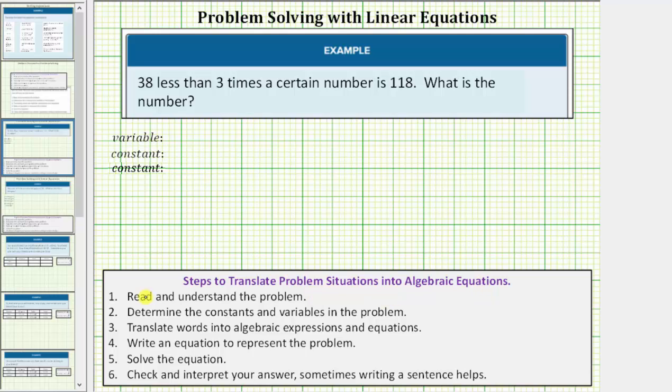Step one, we read and understand the problem. So we're looking for a certain number such that thirty-eight less than three times that number is 118.